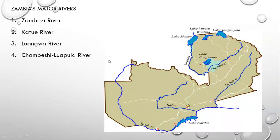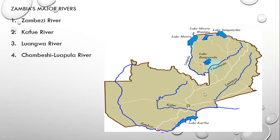As you can see on this map, there is the Zambezi River, the Kafue River, and the Luangwa River. The Luangwa River, like the Zambezi River and these major rivers in general, have what we call tributaries. Tributaries are smaller rivers that branch from or join the major rivers. For example, the Lunsemfwa River is a tributary of the Luangwa River.